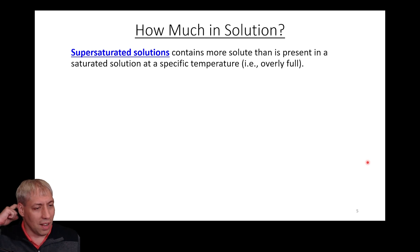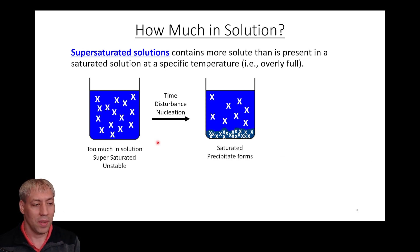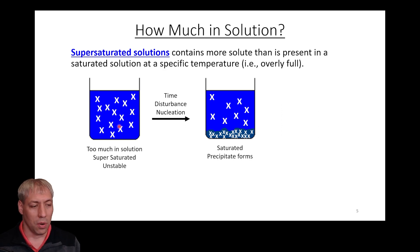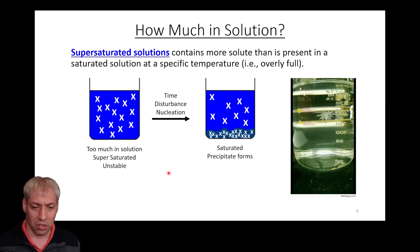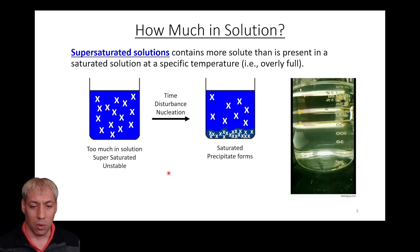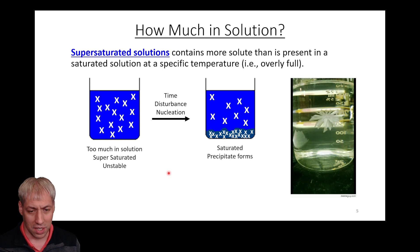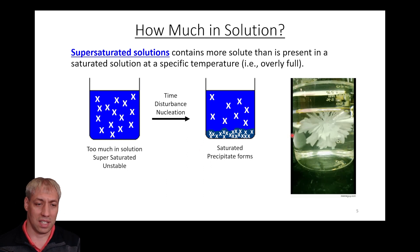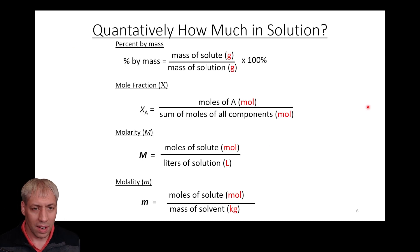There's also a special case: a supersaturated solution, which is a non-equilibrium condition where you've tricked the system into holding more than it should. For example, heating the solution then cooling it rapidly can trap more solute in solution than is stable. When you perturb the system — like throwing a crystal in — the excess solid precipitates out quickly, as shown in this short video.